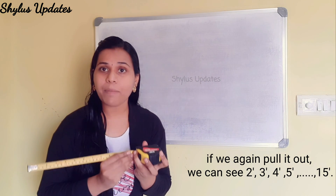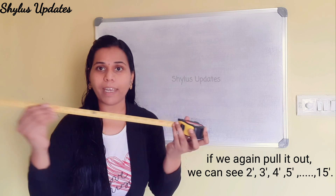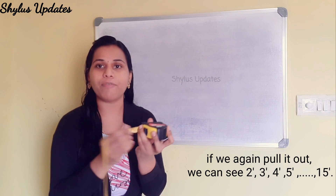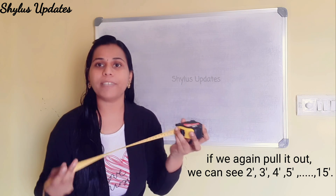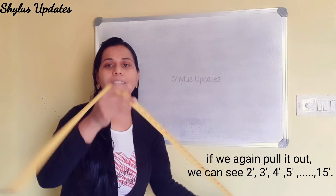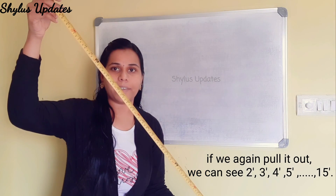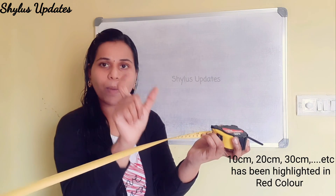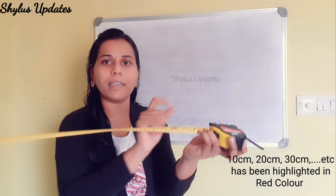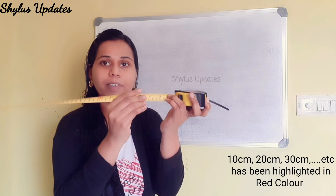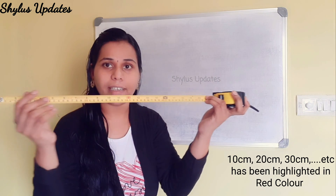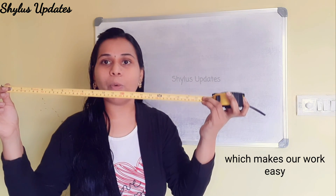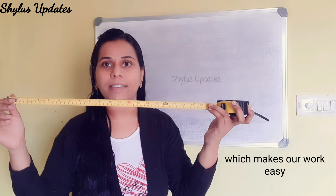If we pull it out again, we can see 2 feet, 3 feet, 4 feet, 5 feet, up to 15 feet inside. 10 centimeter, 20 centimeter, 30 centimeter — everything has been highlighted in red color, which makes our work very easy.